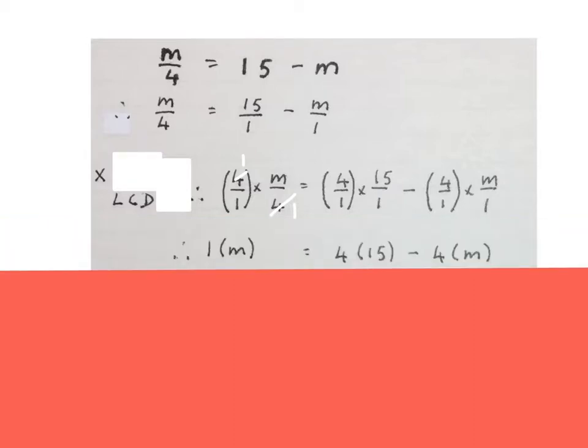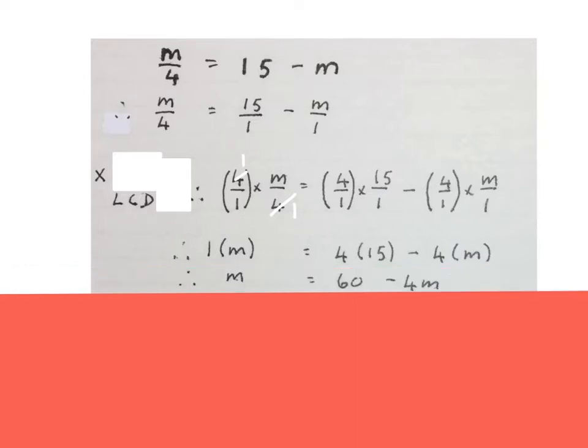I like to write this step. The 1 times m I write out. The 4 times 15 I write out and keep the minus and 4 times m I write out. Then you simplify. 1 times m is m. 4 times 15 is 60 and minus 4 times m is minus 4m.